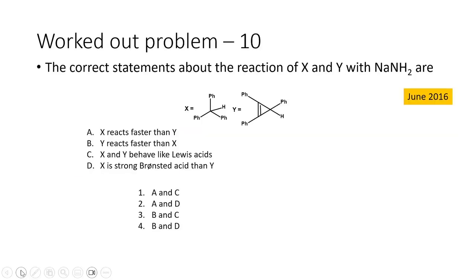Let us move on to the next problem, which appeared in June 2016. The question asks about the correct statement regarding the reaction of X and Y with sodamide. X is a triphenyl-substituted methane and Y is a three-membered ring containing three phenyl rings with an alkene bond also present. Sodamide is a strong base and will abstract hydrogen atoms from these compounds.